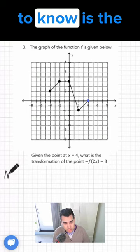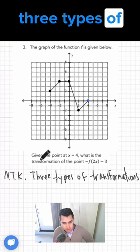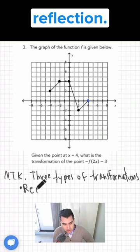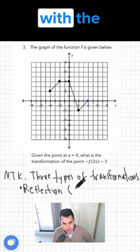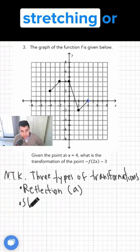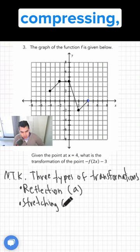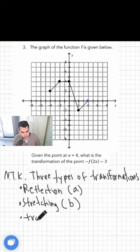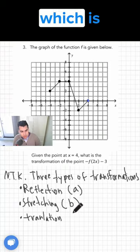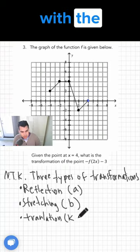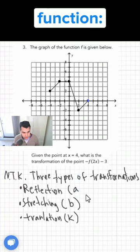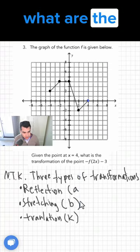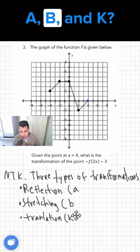What we need to know is the three types of transformations. Reflection, associated with the variable a. Stretching or compressing, which is associated with the variable b. Translation, which is associated with the variable k. Reading the function, what are the values for a, b, and k?